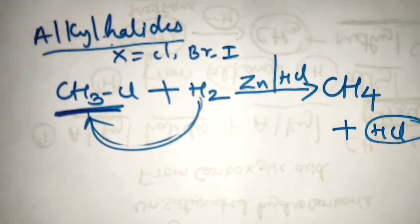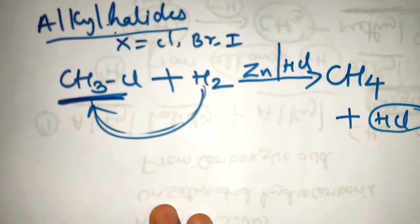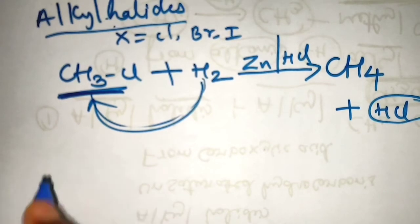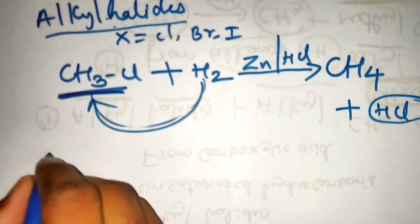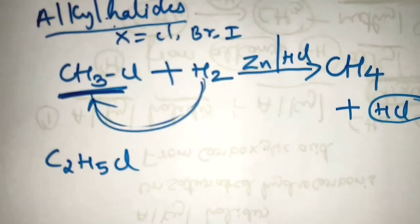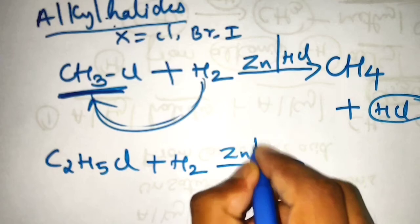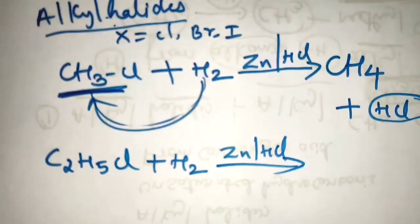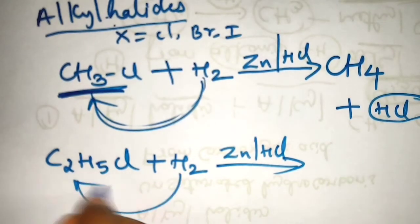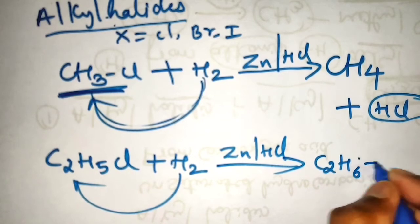This is about the preparation of alkanes from alkyl halides. One more example: I will take chloroethane, C2H5Cl. For this also, you are going to do reduction in the presence of Zn and dilute HCl. One H will be added, and it will become C2H6 plus HCl — that is ethane.